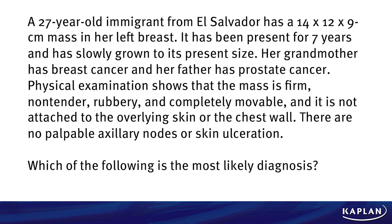A 27-year-old immigrant from El Salvador has a 14 x 12 x 9 cm mass in her left breast. It has been present for seven years and has slowly grown to its present size. Her grandmother has breast cancer, and her father has prostate cancer. Physical examination shows that the mass is firm, non-tender, rubbery, and completely movable, and it is not attached to the overlying skin or chest wall. There are no palpable axillary nodes or skin ulcerations.